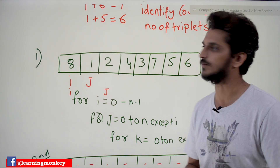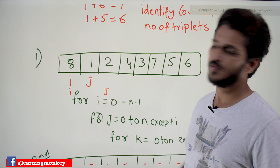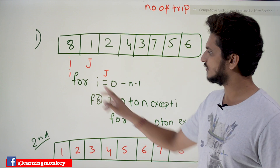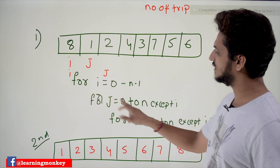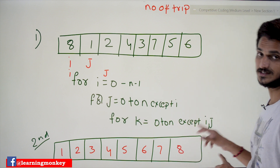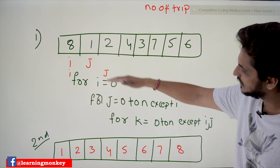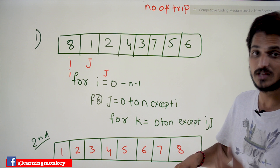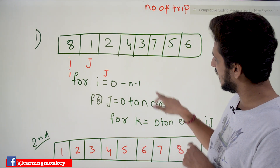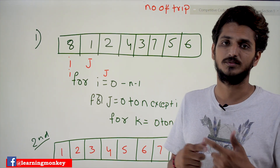For the naïve approach, given this list of elements, we write loops: for i = 0 to n-1, for j = 0 to n except i, for k = 0 to n except i and j. We are using nested loops — a loop within a loop within a loop. Three levels of loops, each executing n times, so it executes n³ times — that is O(n³).